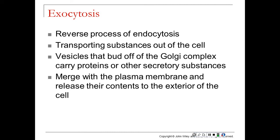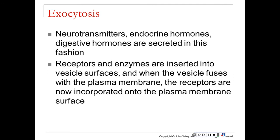Exocytosis is the reverse process of endocytosis — transporting substances out of the cell. The vesicles that bud off of the Golgi complex, carrying those proteins or waste products, merge with the plasma membrane and release contents to the outside of the cell. Neurotransmitters, endocrine hormones, digestive hormones, etc. are all secreted in this fashion. Receptors and enzymes are inserted into those vesicle surfaces, so when that vesicle fuses with the plasma membrane, the receptors are already incorporated into the plasma membrane surface.